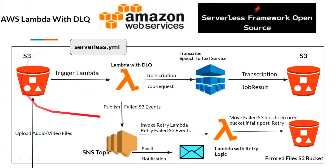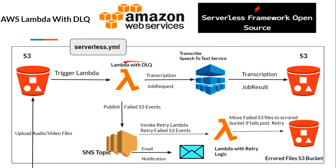This is the updated target flow for our serverless application. We are going to update our Lambda with a dead letter queue configuration. With DLQ, our Lambda will publish all failed S3 events to an SNS topic. From the SNS topic we will subscribe to email as well as another Lambda function to reprocess the same event. With custom retry logic, if we still get failure after a specified number of retries, we will move those files from the actual S3 bucket to an errored file S3 bucket.